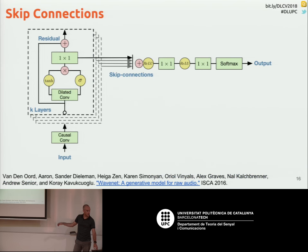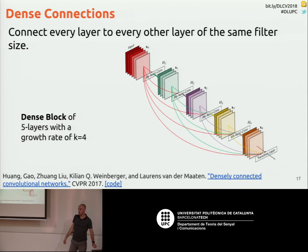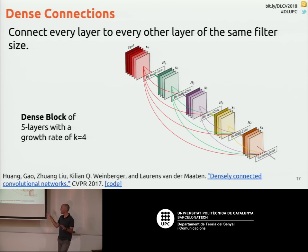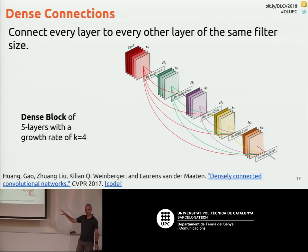Skip connections have also been used for speech — WaveNet uses them, where at some point the signal goes directly to the output. There's also the concept of dense layers, called DenseNet, where you connect everything — all layers are connected to each other. That's another type of architecture which has shown some improvement, but also at the cost of more parameters, because more connections means more parameters. Every connection has a filter that you need to train and estimate. So when we talk about dense connections, that's what it means.